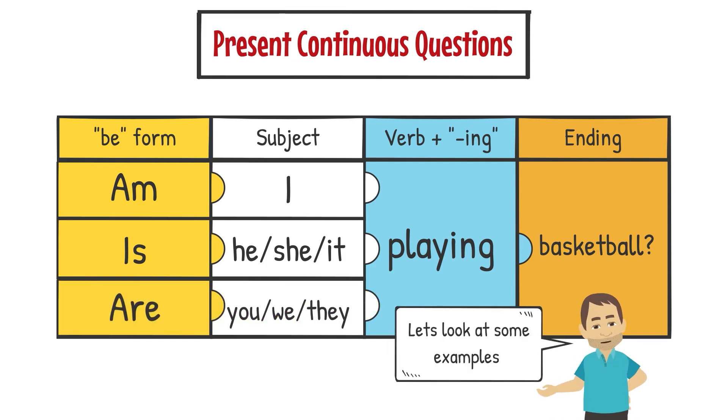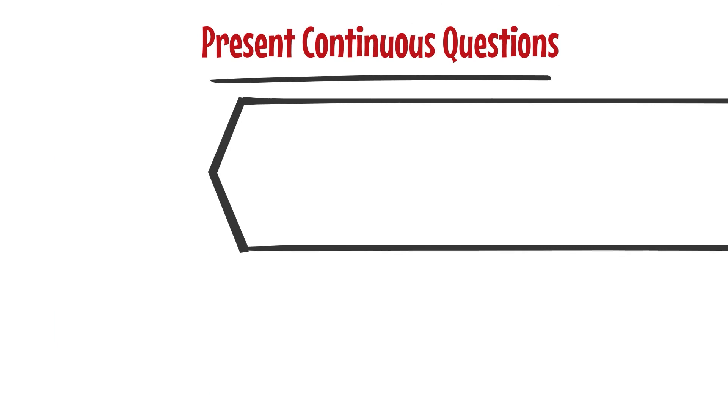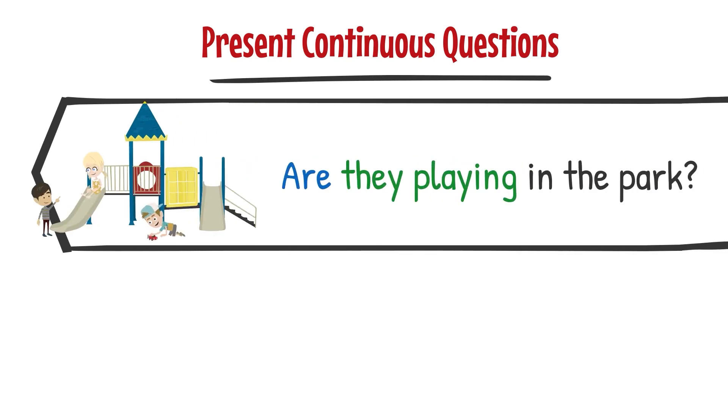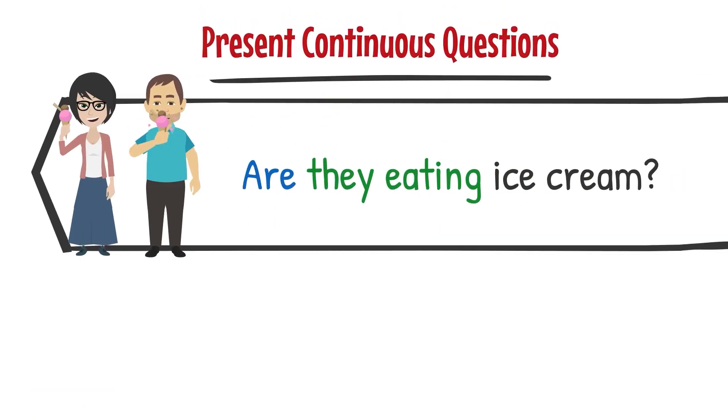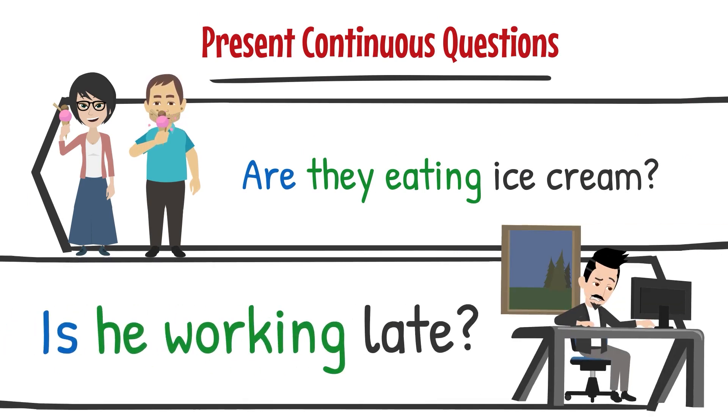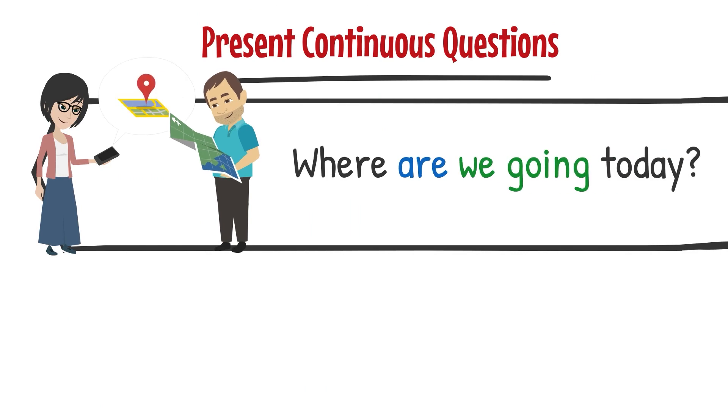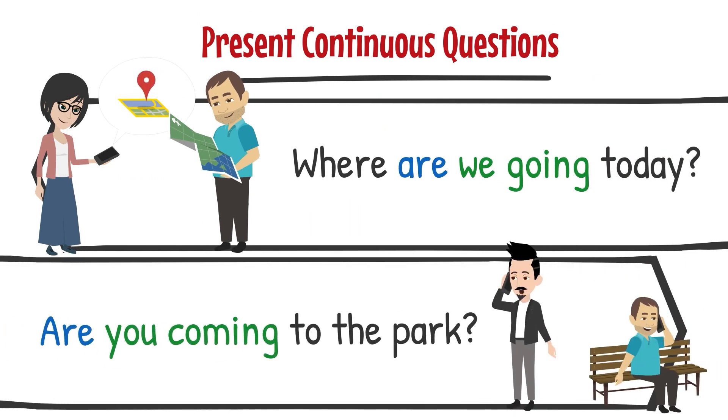Let's look at some examples. Are they playing in the park? Is she cycling to work? Are they eating ice cream? Is he working late? Where are we going today? Are you coming to the park? Question words such as what, where, and how can be used before the verb to form open questions.